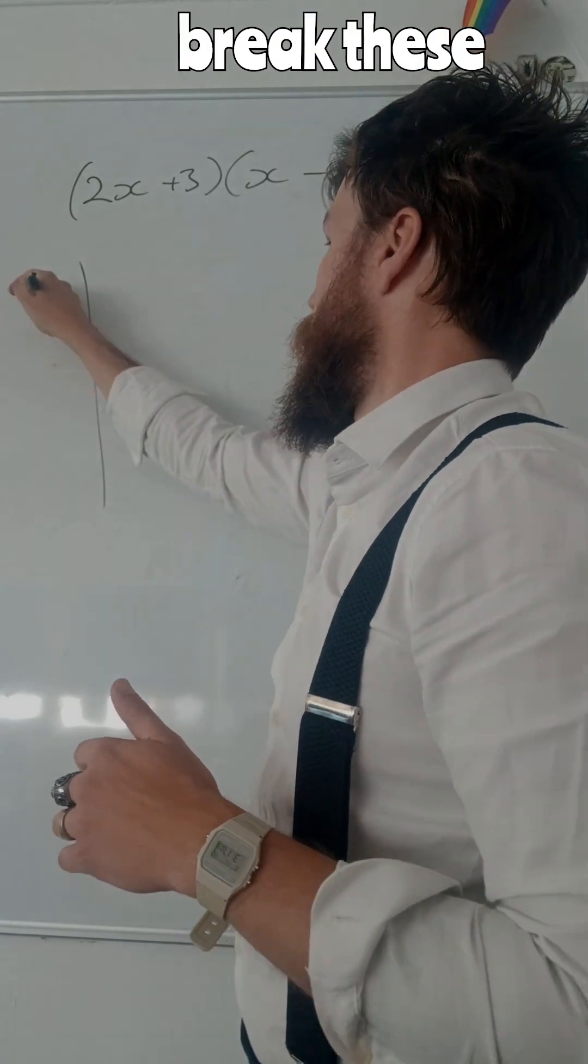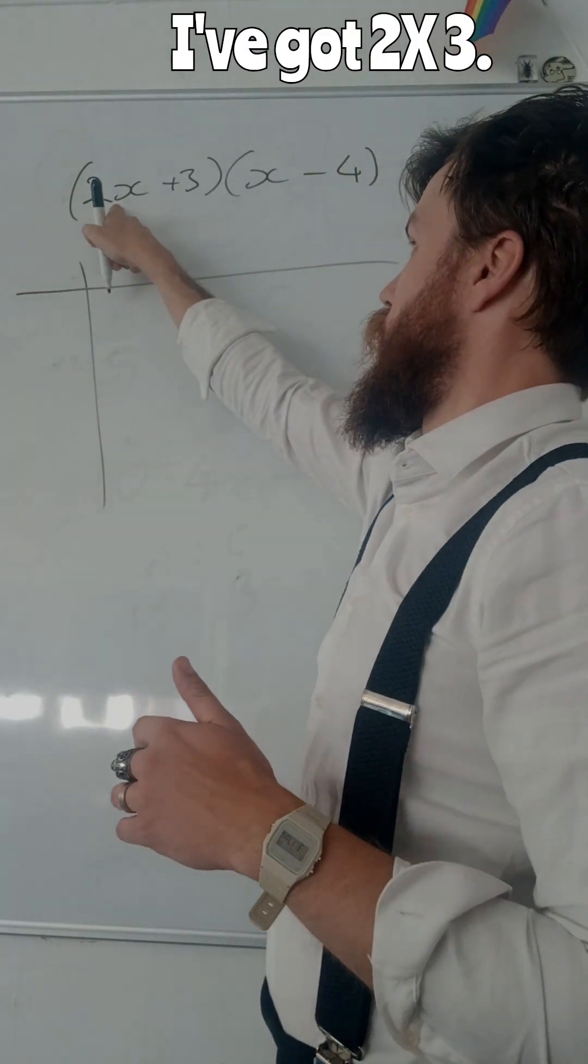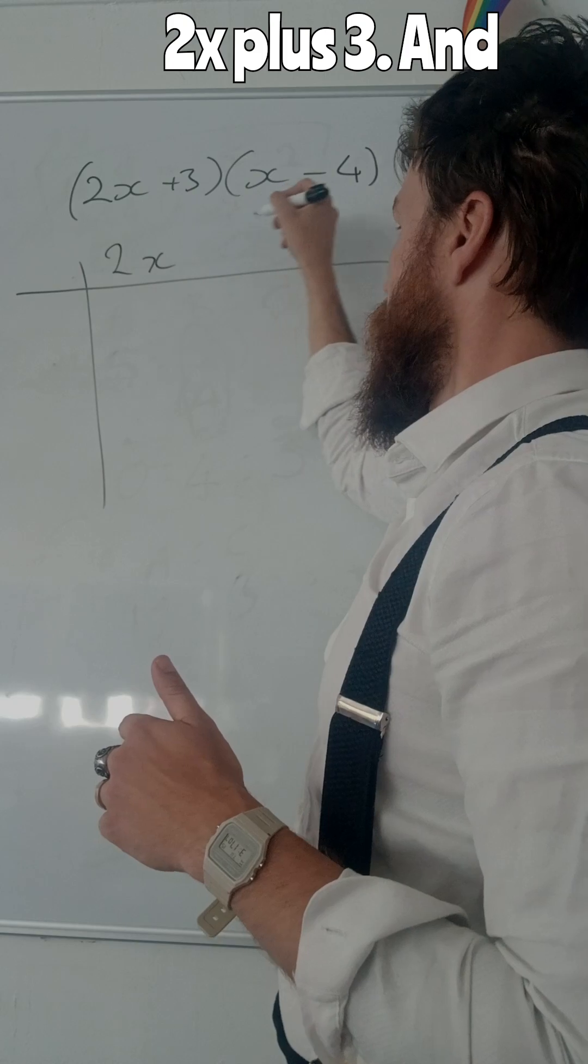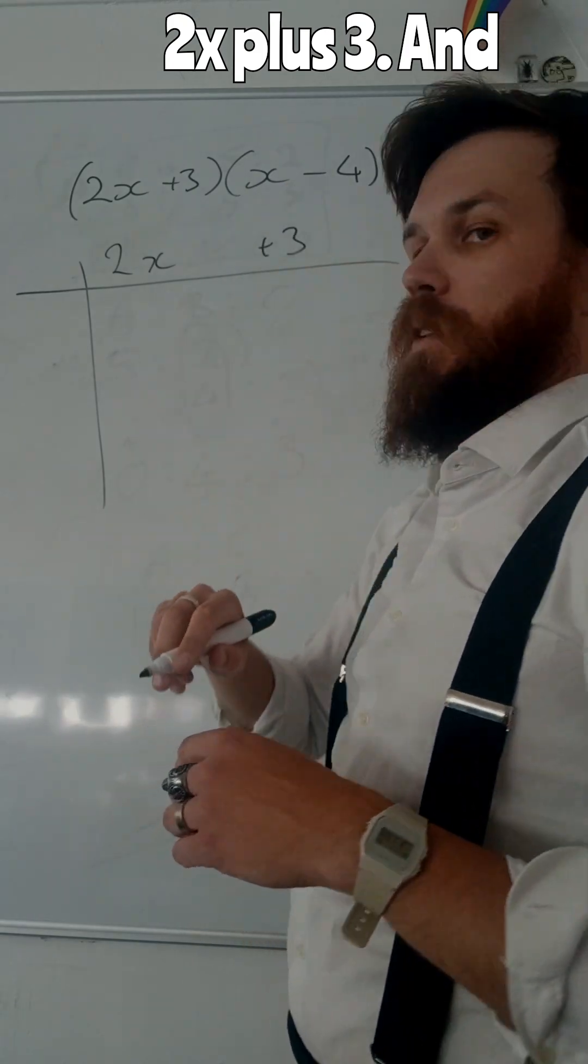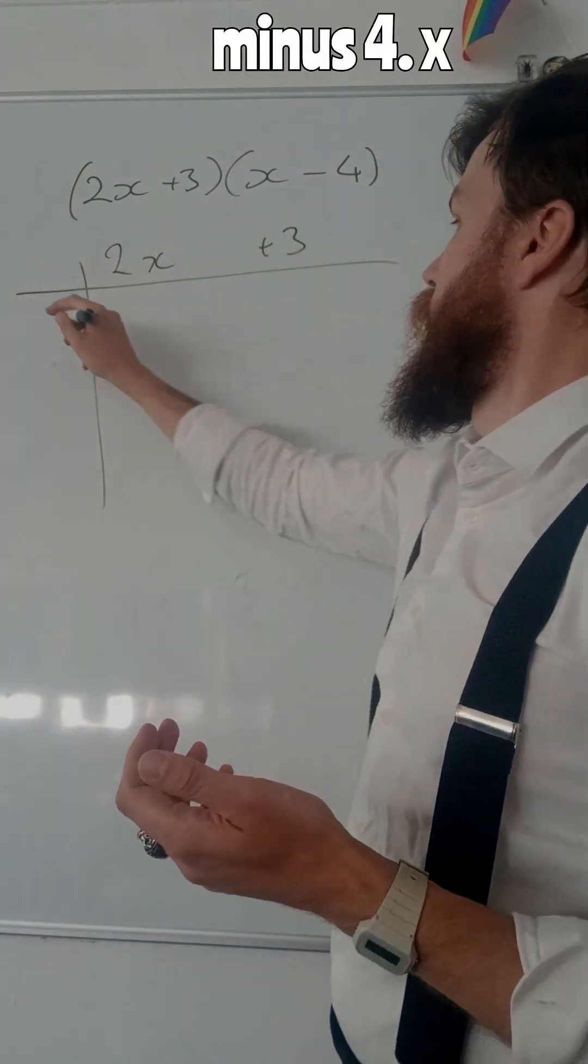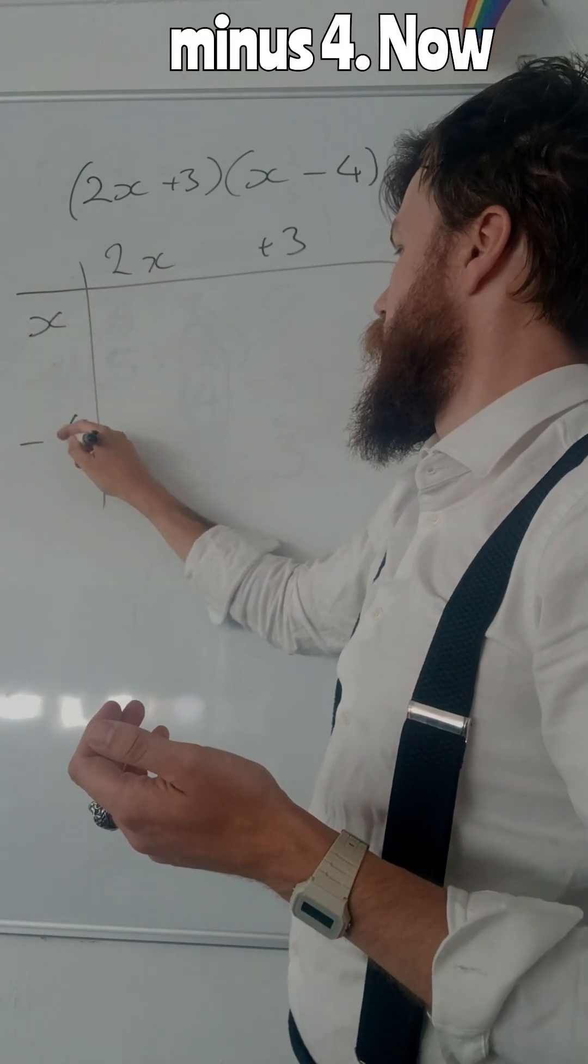So what I'm going to do is I'm going to break these down into their terms. I've got 2x plus 3, and I've got x minus 4.